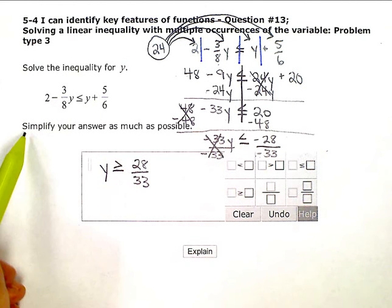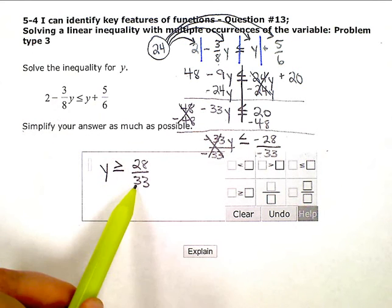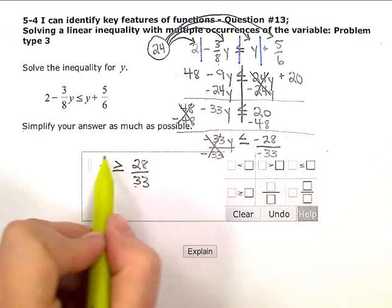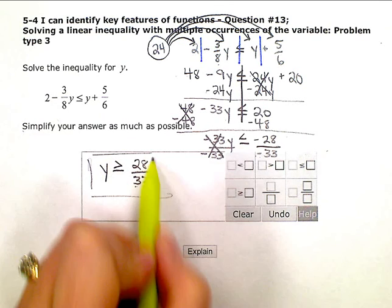The instructions say simplify your answer as much as possible. So if you can reduce your fraction, go ahead and reduce. Mine won't reduce. So I'm done. And that's my solution.